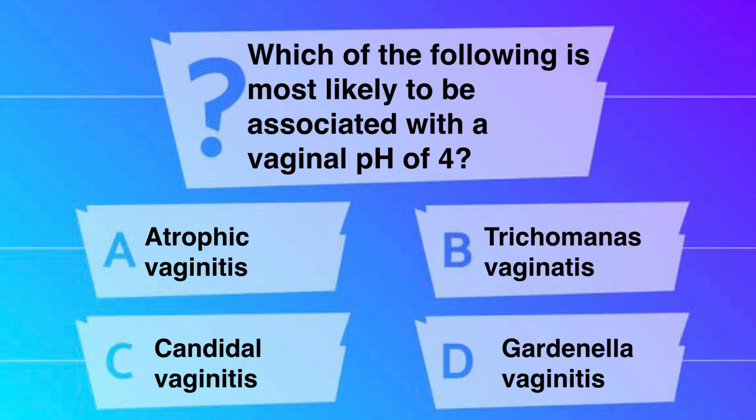Which of the following is most likely to be associated with a vaginal pH of 4? Option A, atrophic vaginitis. Option B, trichomonas vaginitis. Option C, candidal vaginitis. Or option D, Gardnerella vaginitis.